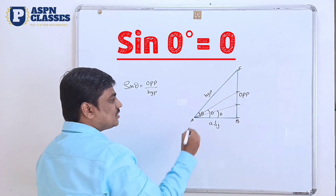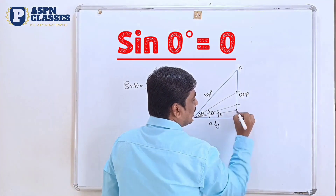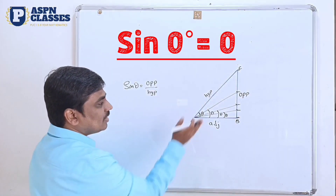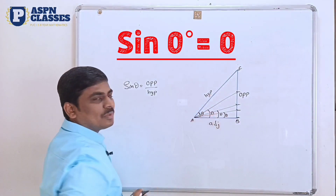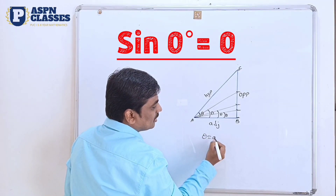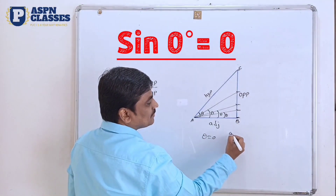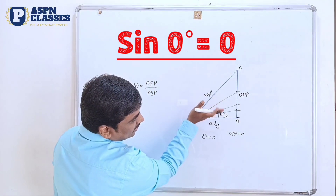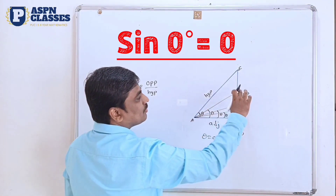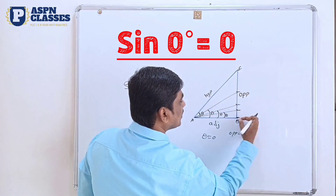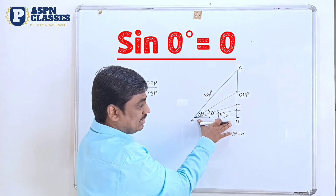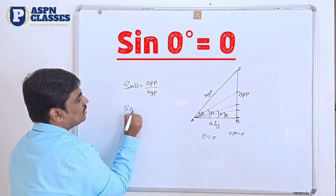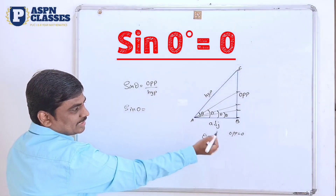So if I continue to do this, the theta becomes 0. The opposite side becomes 0. When theta is equal to 0, the opposite side is 0. So the sin of 0: the opposite side is 0. The hypotenuse remains as it is. The answer is 0 divided by anything.